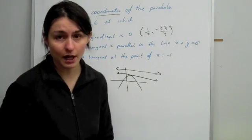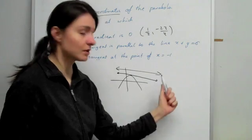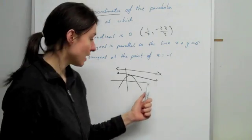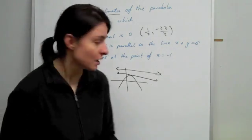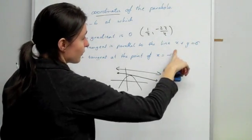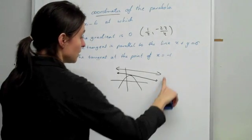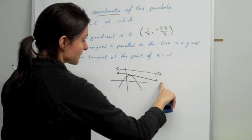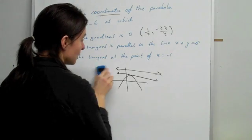Sometimes they give you an external line. They tell you information about the external line and using that, you have to apply it to your tangent. So what we need to do is we need to see that basically whatever gradient we have for this particular line, this external line, it's going to be the same gradient of your tangent.